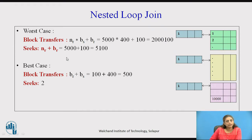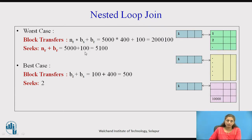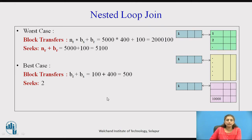The number of seeks: Text (inner relation S) is read 5000 times — once per tuple of Student — giving 5000 seeks for S, plus 100 seeks for R. Total seeks = 5100. In the best case, if both relations fit in main memory, total block transfers = 500 and seeks = 2.